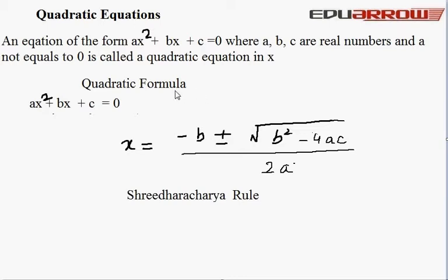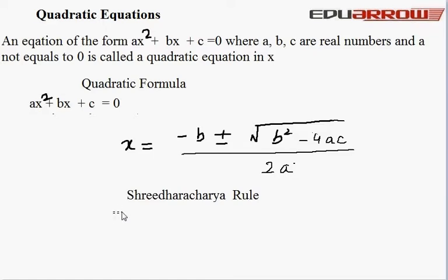Now we read the quadratic formula. For ax² + bx + c = 0, x is equal to minus b plus or minus under root b² minus 4ac, upon 2a. By this formula we solve the quadratic equation. This formula is also known as Sridharacharya rule.